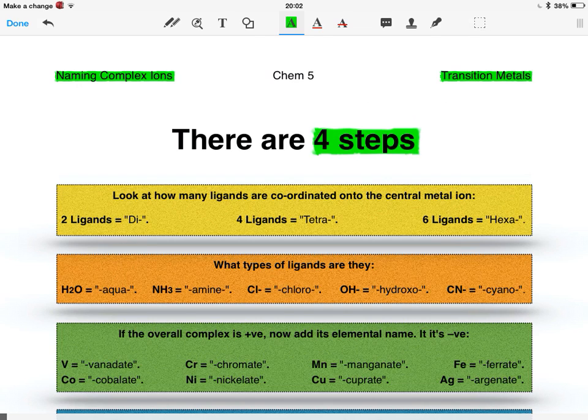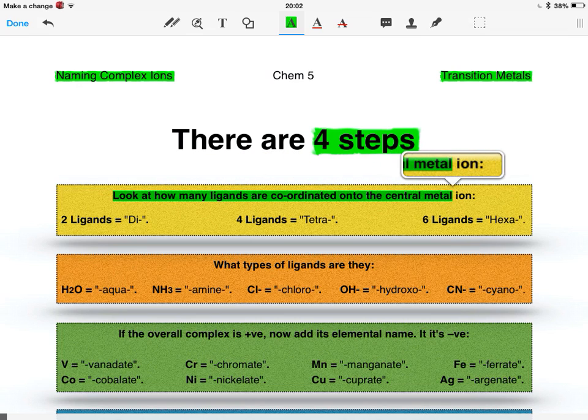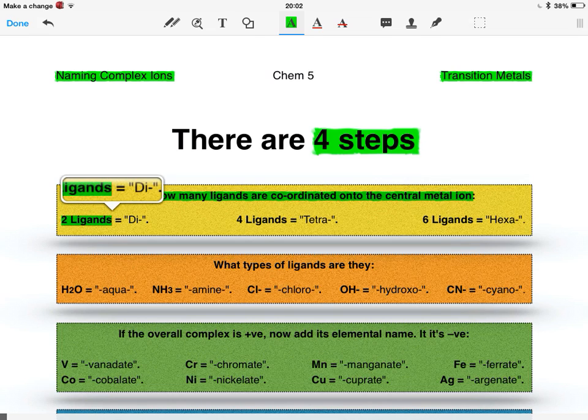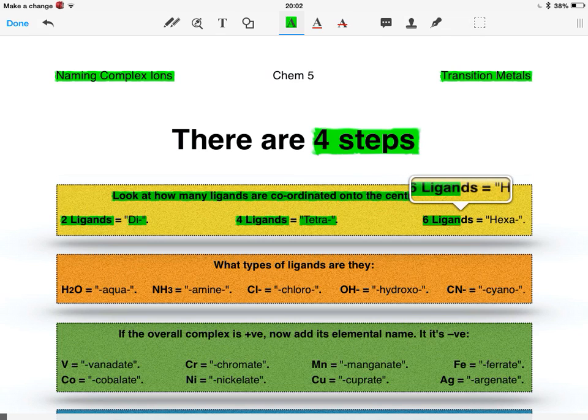The first is you look at how many ligands are coordinated onto the central metal ion. So how many coordinate bonds are there? If there's two, then you start off with di. If there's four, it's tetra. And if it's six, it's hexa.